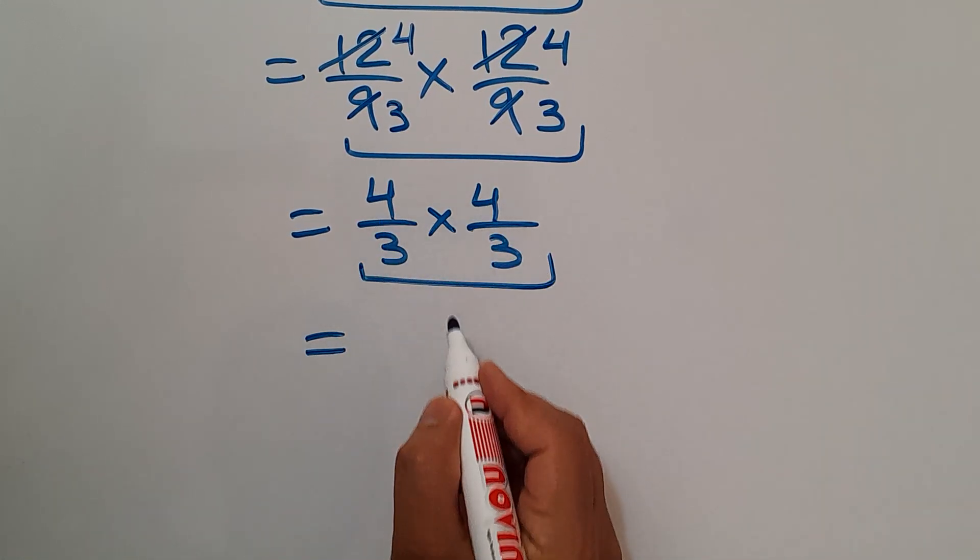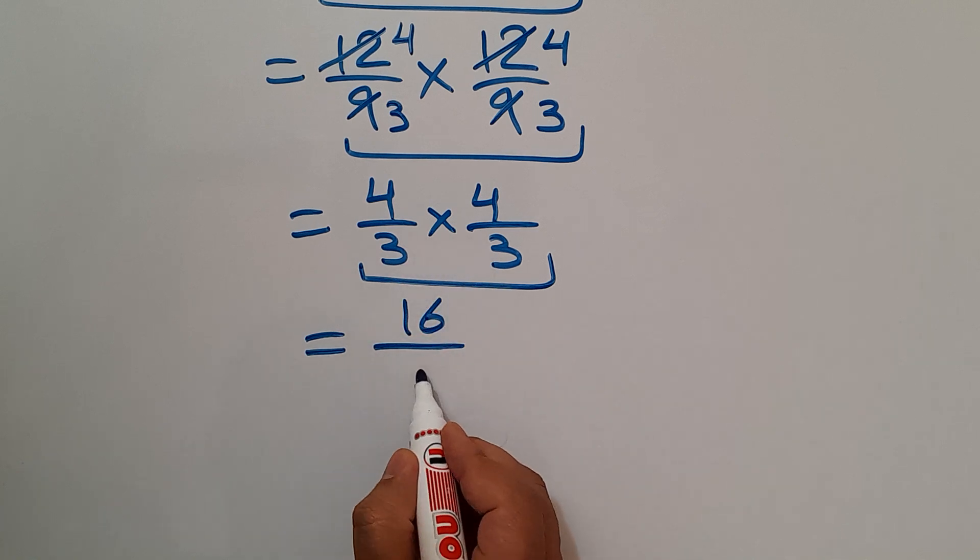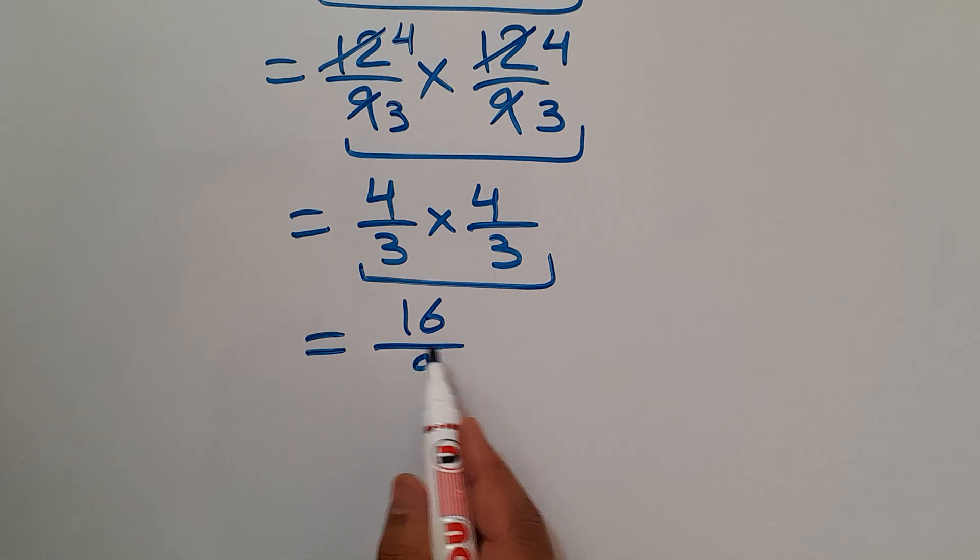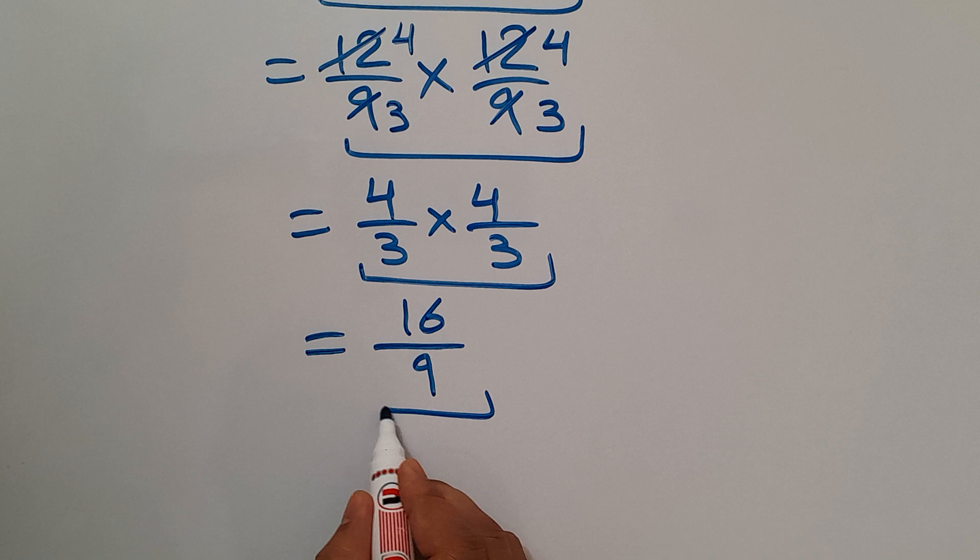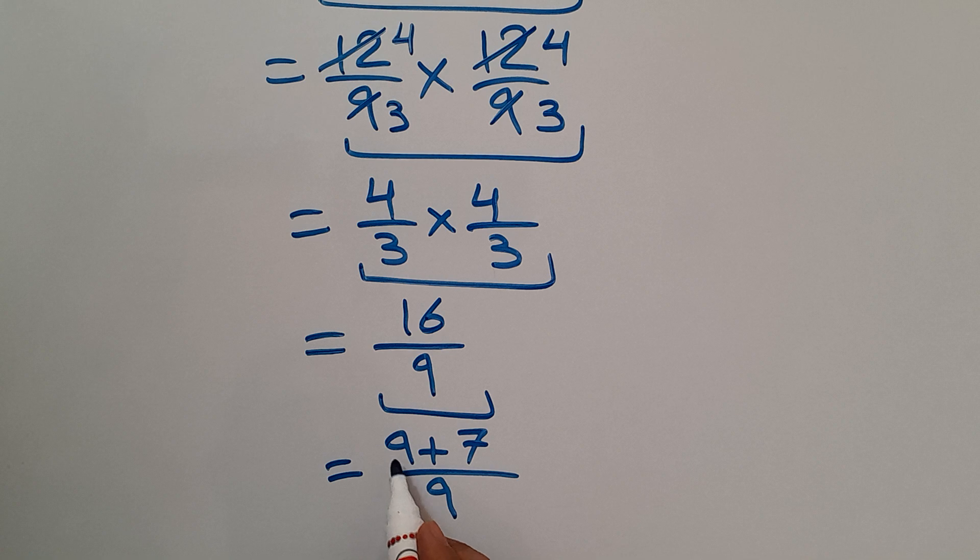4 times 4 equals 16 over 3 times 3 equals 9. Now let's convert this improper fraction to a mixed number. 16 equals 9 plus 7, so 9 plus 7 over 9. 9 divided by 9 equals 1, and 1 7 over 9.